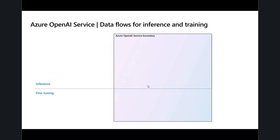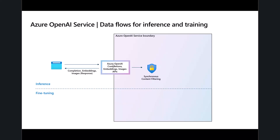Let's look at the data flow during inference when we put a question into the large language model. That goes in through one of the API calls. The first step is Azure Content Safety, which does content filtering — looking for harmful speech, hate speech, adult content, and similar issues. If detected, it sends an error back. If not detected, the request goes into the Azure OpenAI models or one of your fine-tuned models. The response then also goes through content filtering as a second line of defense, catching anything that might have slipped through and returning an error if inappropriate content is detected.